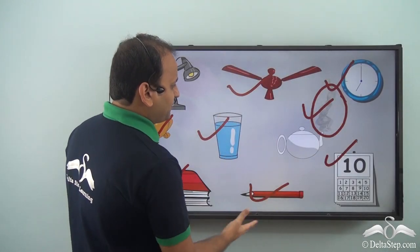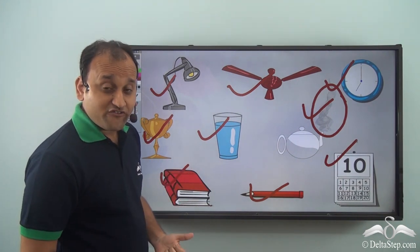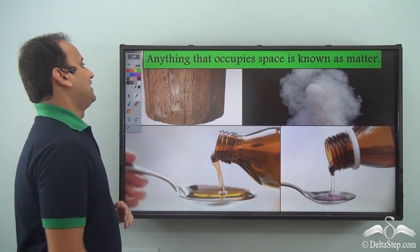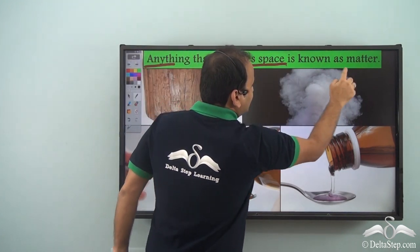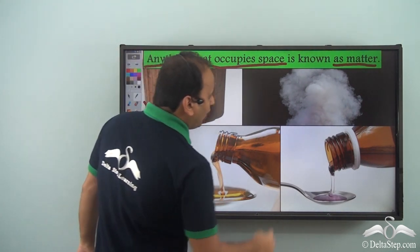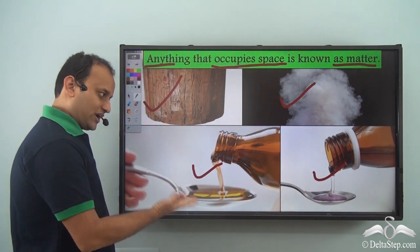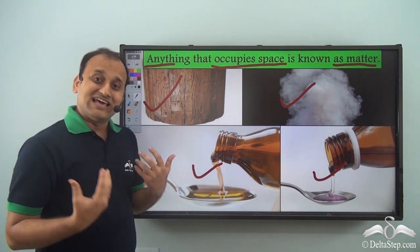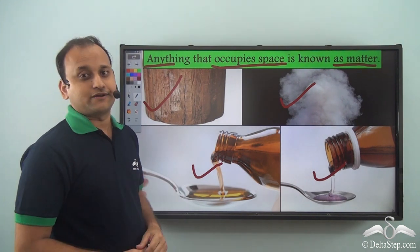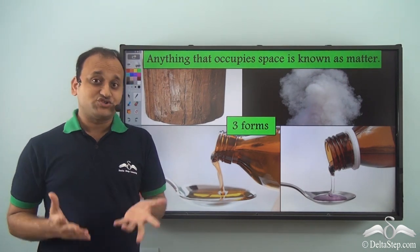So what are these three different things? Well, these three are three different forms of matter. Now what exactly is matter? Well, anything that occupies space is known as matter. So whether it is a log of wood, or steam, or these syrups — whatever you have, they will occupy some sort of space, and that is why they are all different forms of matter. In fact, matter has three forms.